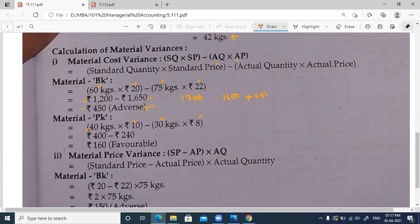For PK, the next raw material, the standard is 40 into 10, which is 400. In actuals, we are consuming less quantity, and as per rate, we are also saving 2 rupees per kg. We are saving quantity as well as price. Here 400 is the standard cost, 240 is the actual, so we are saving 160, which is favorable for material PK.